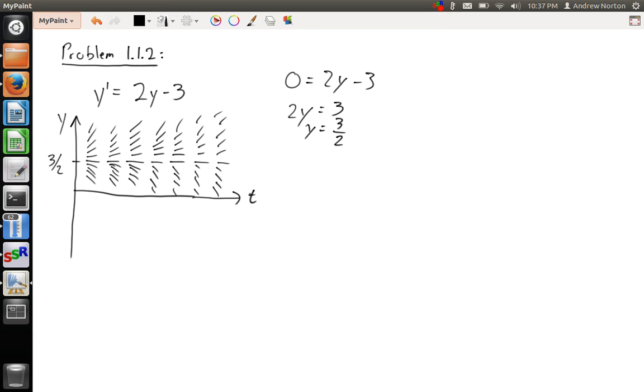So let's consider what happens as t goes to infinity. Well, we start at 3 halves. But as we go off to infinity, you can kind of see how these slopes want to push the arrows up that way. So it diverges. And we can say it diverges from 3 halves, and what that means is that it goes away from 3 halves.